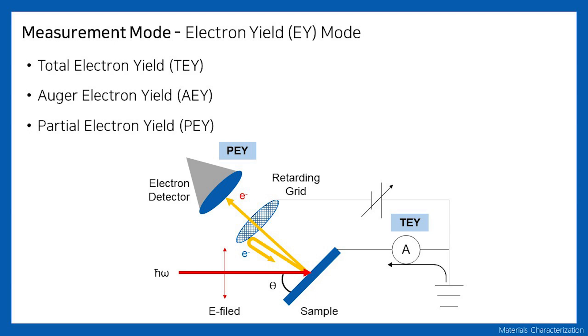In Auger electron yield, photoelectrons are detected only in the limited and narrow energy range around the Auger peak. In partial electron yield, photoelectrons generated by photoemission are excluded, and the spectrum is measured. In this mode, a grid made of metal is placed in front of the electron detector, and a retarding voltage is applied to the grid. As a result, photoelectrons with low energy are removed by the grid before reaching the detector, and photoelectrons emitted by photoemission are prevented from being detected.